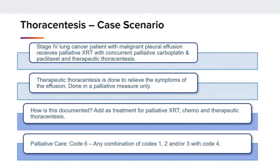Here is another case scenario for thoracentesis. We have a stage 4 lung cancer patient with malignant pleural effusion who receives palliative radiation with concurrent palliative carboplatin and paclitaxel, and a therapeutic thoracentesis. A therapeutic thoracentesis is done to relieve the symptoms of the effusion in a palliative measure. We would document treatment for palliative radiation, chemo, and therapeutic thoracentesis, using code 6 — any combination of codes 1, 2, and/or 3 with code 4. The therapeutic thoracentesis removes a larger volume of pleural fluid to relieve symptoms, but when used as the only palliative care procedure, it is assigned code 7 in the palliative care data item.